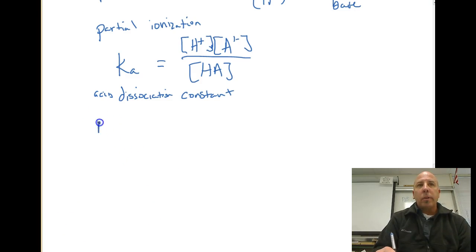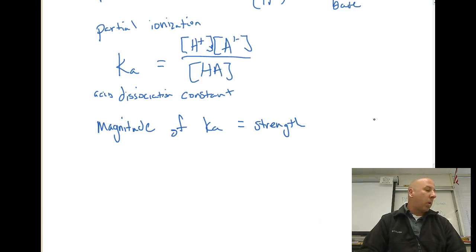Now, the magnitude of Ka indicates the strength of our acid, meaning it tells us how much of the hydrogen ions are dissociated. Remember, in a strong acid, we dissociate all of the hydrogen ions. So a 0.1 molar for HCl is going to be 0.1 molar of hydrogen ions. But the magnitude of Ka is going to tell us the strength.